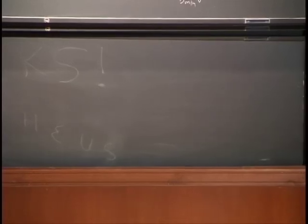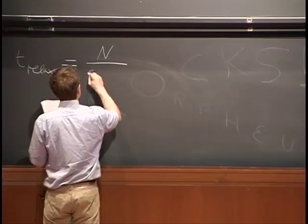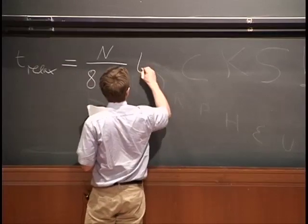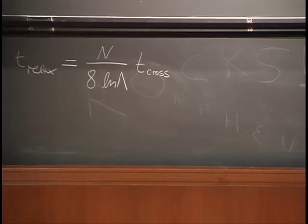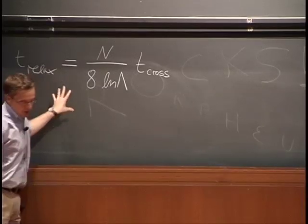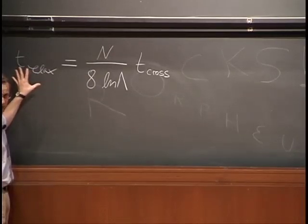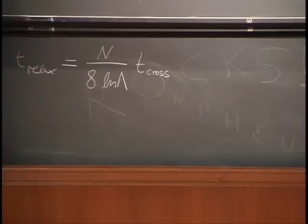At the end of the day, you get for the relaxation time the following estimate: T_relax ~ (N / log Λ) × t_cross. This is the fundamental result from this simple estimate of how important encounters are. This equation is important for gauging whether a system is collisionless or not. To be collisionless, we require that over any timescale we are physically interested in, those timescales must be smaller than the relaxation time. If that's the case, two-body collisions are unimportant and the particles move in a smooth potential.